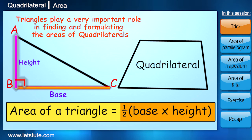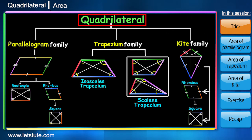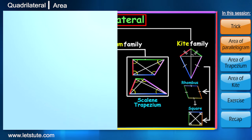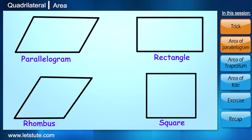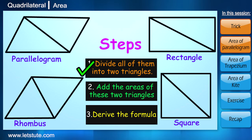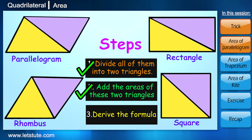Let's again start with our first family, the parallelogram family. There are four members in parallelogram family. We have to follow these three steps. The first step is divide all of them into two triangles. Then add the areas of these two triangles. And the final step is arrange them and derive the formula.